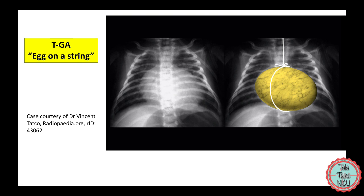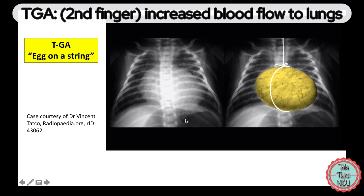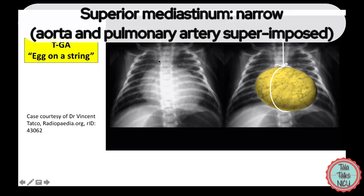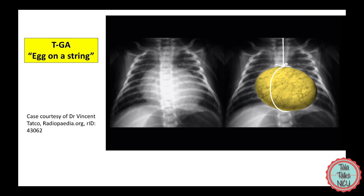Transposition of the great arteries is number two — the index finger of the 'I love you' sign. Again, we'd often expect to see increased blood flow to the lungs. The classic sign for TGA is called 'egg on a string,' which is honestly pretty hard to appreciate. The superior mediastinum is normally super narrow in TGA because the two great vessels — the aorta and the pulmonary artery — instead of being side by side are kind of on top of each other, superimposed, taking up a much smaller area. So you see a really skinny upper mediastinum and generally a generously sized heart.